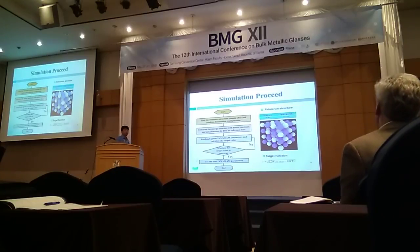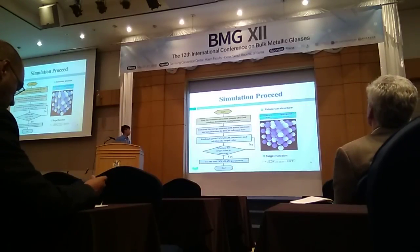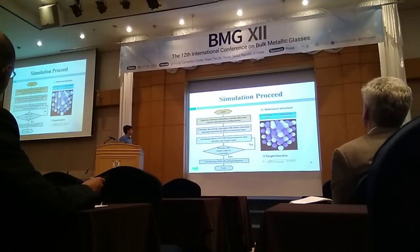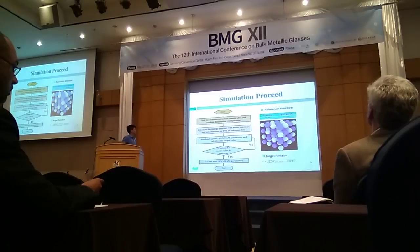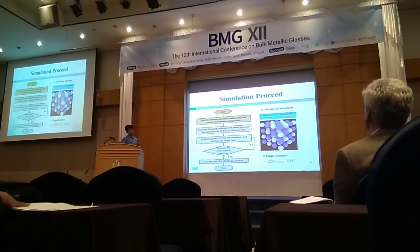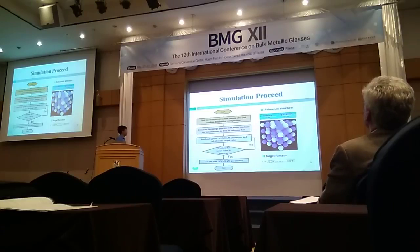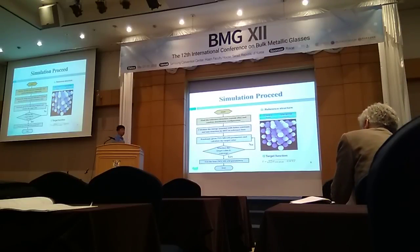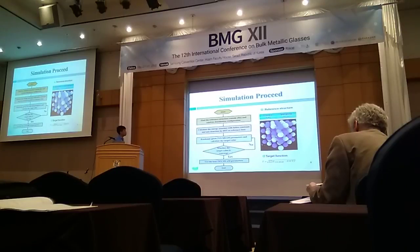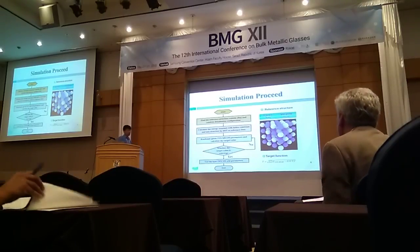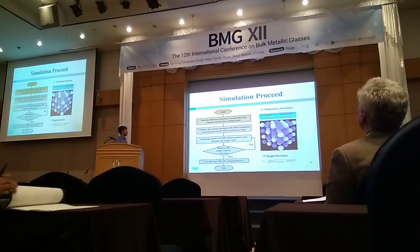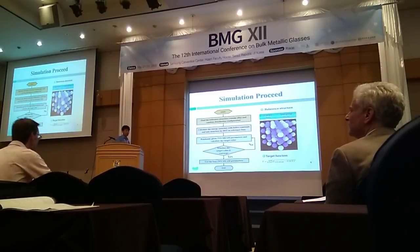Here is our fitting procedure for how to find the 2NN MEAM potential. First, we find the reference structure containing the alloy and random distribution configurations. For our BMG, we calculate the energy associated with the crystal structure and the amorphous structure by DFT as reference data. We need to find DFT reference data for the alloy and amorphous state.